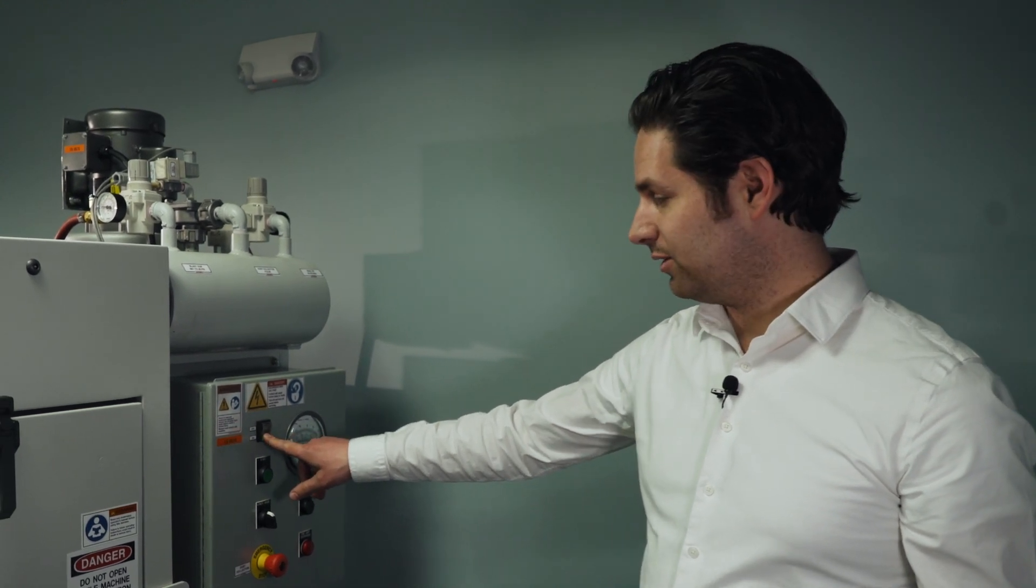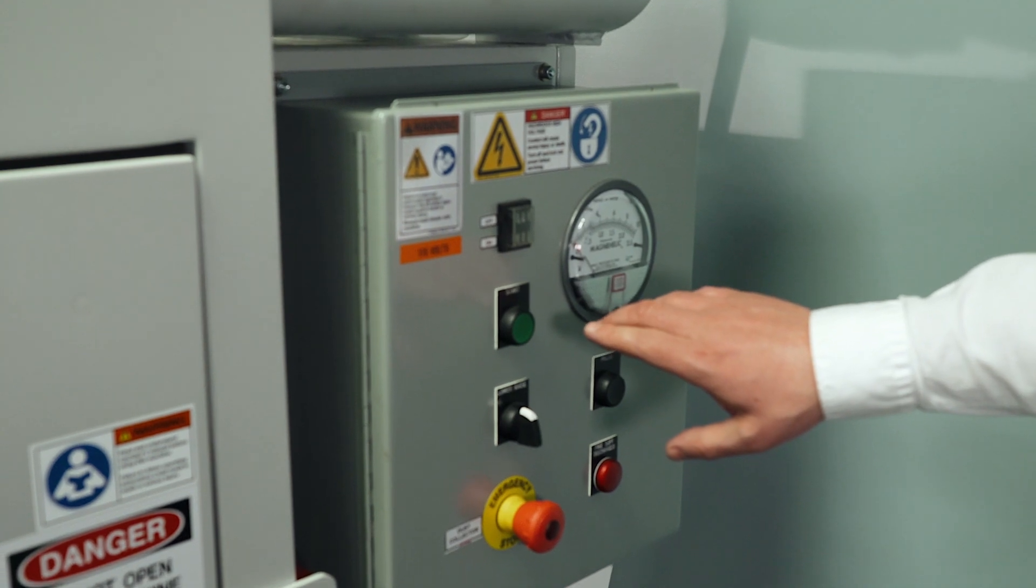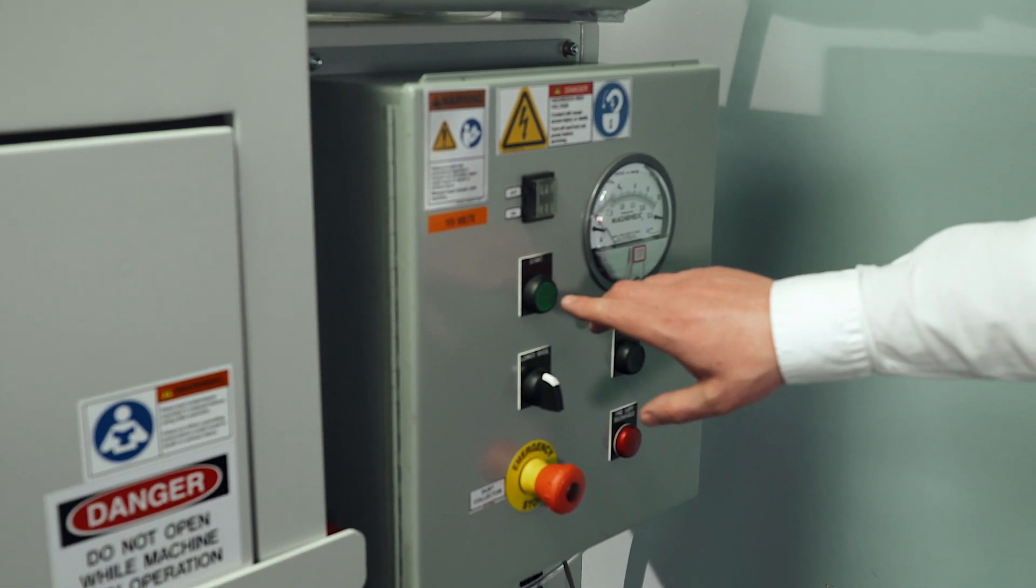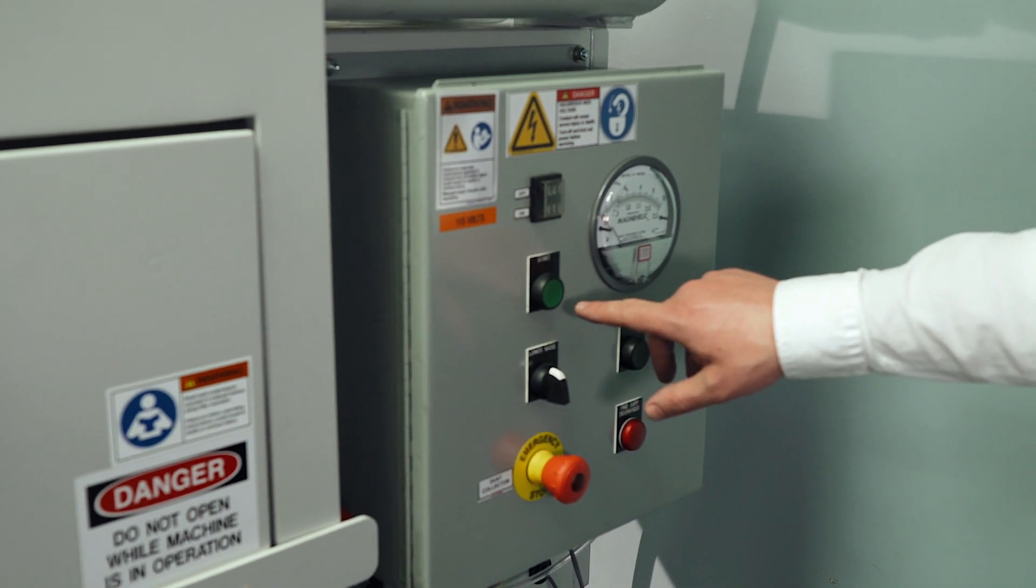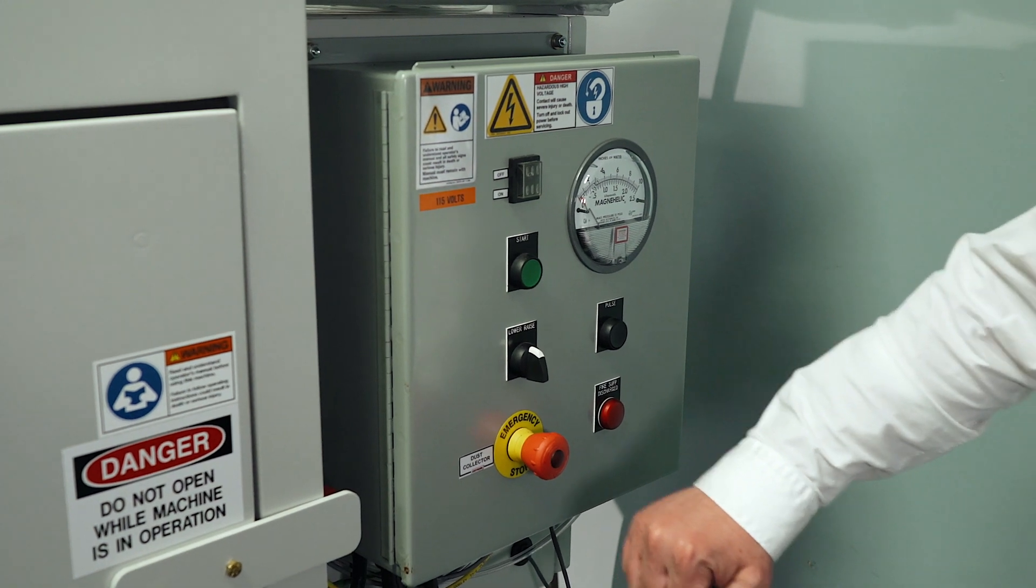You can now turn the unit to the on position. Once you turn it to on, the fire suppression light will flash once. If the fire suppression on the unit has been discharged, this light will remain constant and you won't be able to use the unit. Once you press the start button, the dust collector will start. The emergency stop button will kill power to the system.